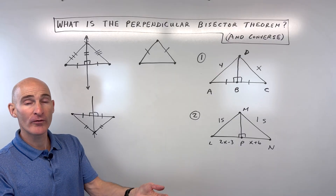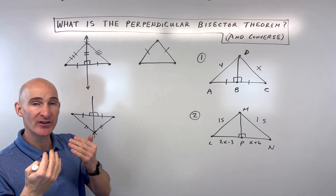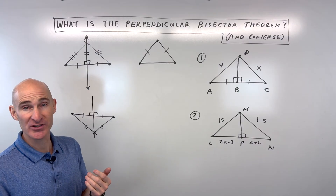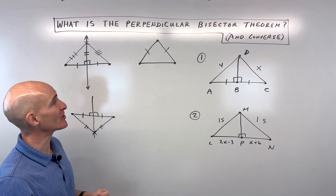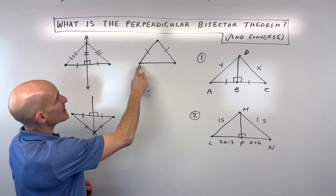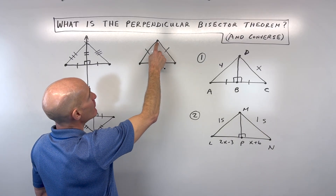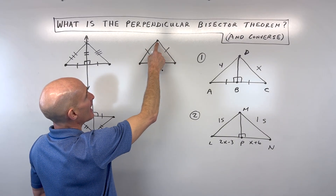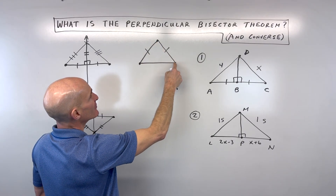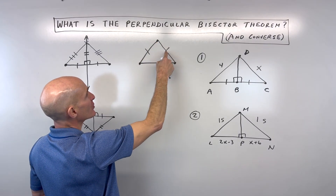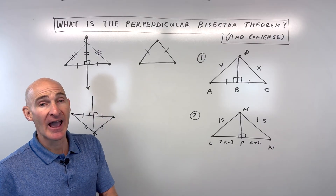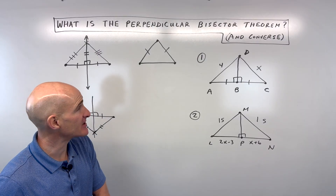Now what's the converse? We know from earlier in geometry that the converse is like saying that conditional statement in reverse — you're switching the hypothesis and the conclusion. So if you have a segment and a point not on that segment, and you measure the distances to the two endpoints and find that they're congruent, what do you know about that point? It has to lie on the perpendicular bisector.